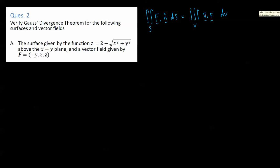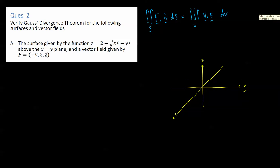Let's look at our surface: z is equal to 2 minus the square root of x squared plus y squared. This is a cone — you need to know that. The key indication is that z equals the square root of x squared plus y squared, or something proportional to that square root.